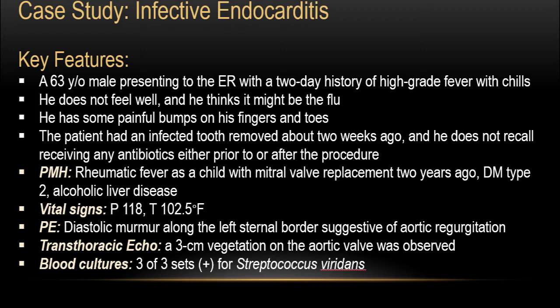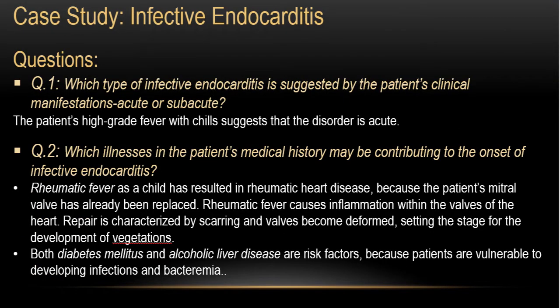With a positive blood culture and a positive echo, the two major Duke criteria are met. The diagnosis is infective endocarditis for sure. The patient's high-grade fever and chills suggest that this disorder is acute rather than subacute.